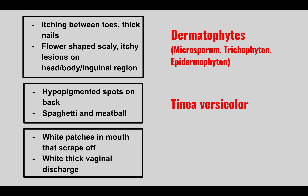The next condition is something that comes in with white patches in the mouth that scrape off, or white thick vaginal discharge. This is going to be due to Candida albicans, and we often see pseudohyphae on KOH prep for Candida. The white patches in the mouth that are easily scrapable are known as oral thrush, very commonly seen in immunocompromised patients such as those with HIV or AIDS. Candida can also cause a genital infection with thick white cottage cheese-like discharge.